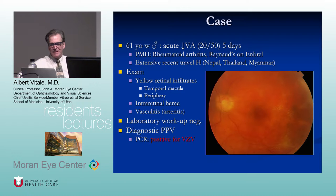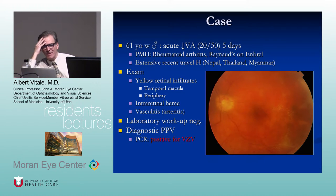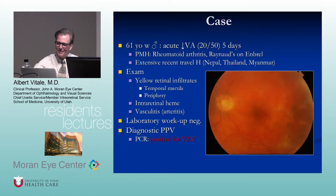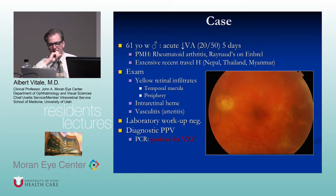This was a real patient — a nice guy who did a lot of traveling for the LDS church, going to Nepal, Thailand, and Myanmar. He presented five days after onset with what was initially called a rule-out branch retinal vein occlusion. You can see areas of retinal whitening, retinal vasculitis, vitritis — the media is not clear — and some intraretinal hemorrhage. He has acute retinal necrosis.